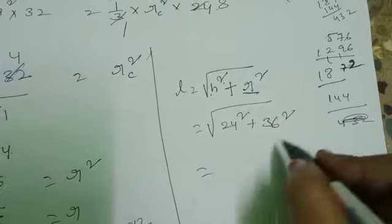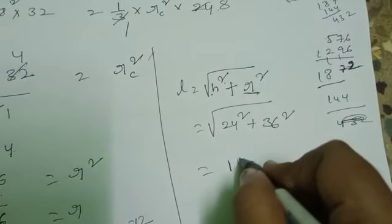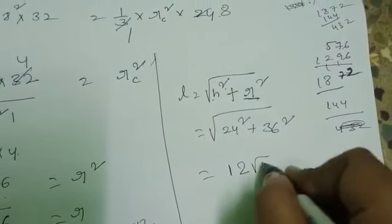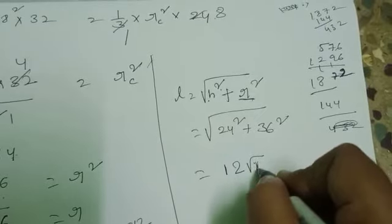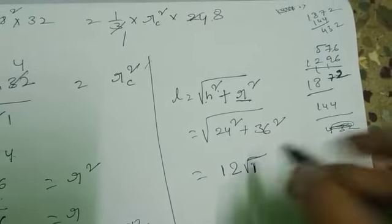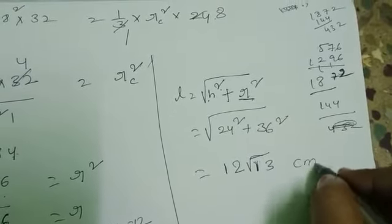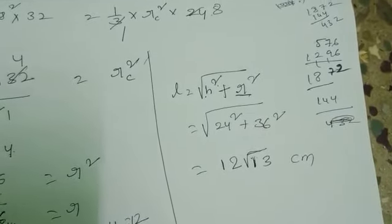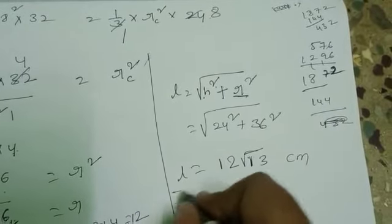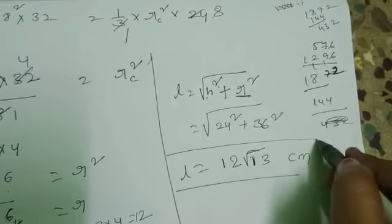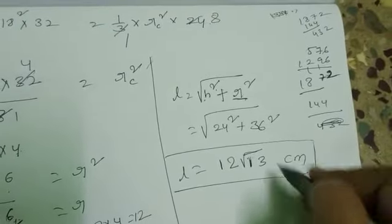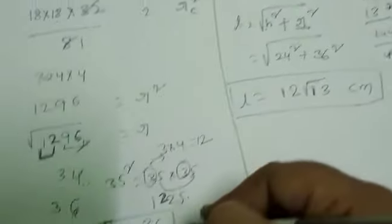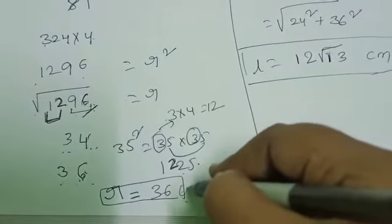This value equal to 12 root 13 centimeters. Therefore slant length equal to 12 root 13 centimeters. Radius equal to 36 centimeters.